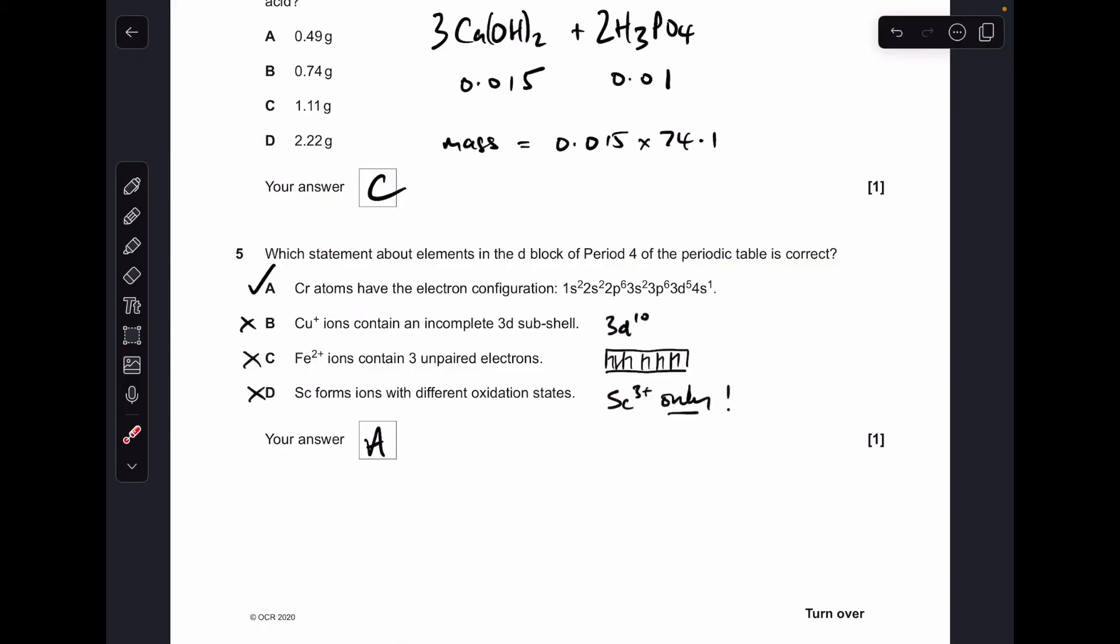And just for revision purposes, I'll just run through why B, C, and D are wrong. So copper 1+ ions have the configuration 3d10, so that's a complete 3d subshell. Iron 2+ ions have one, two, three, four unpaired electrons. And scandium only forms 3+ ions, so it doesn't form ions with different oxidation states.